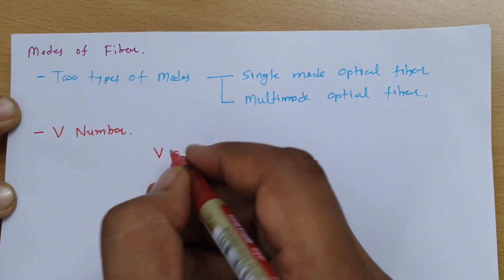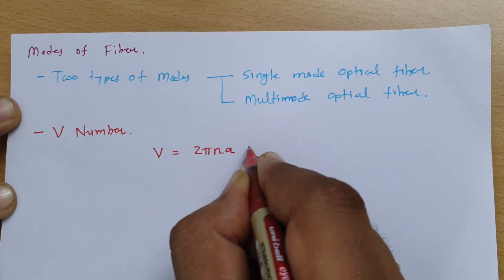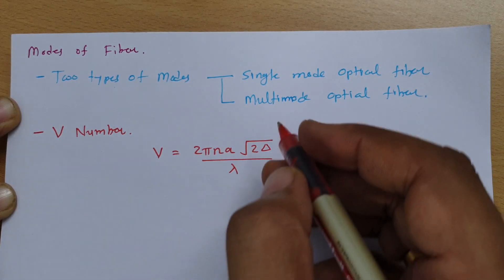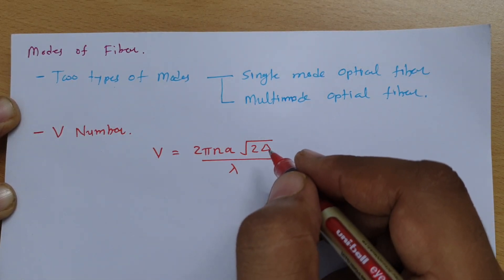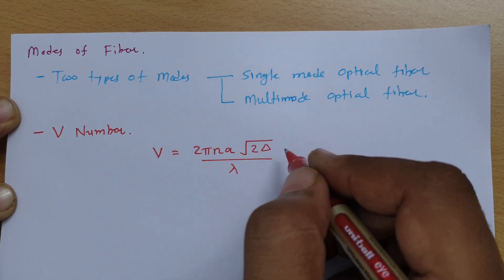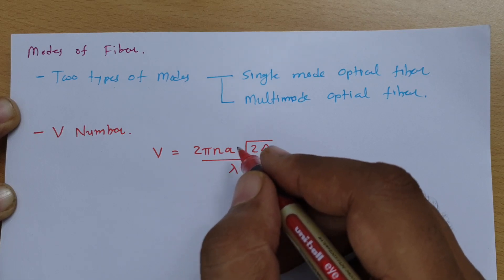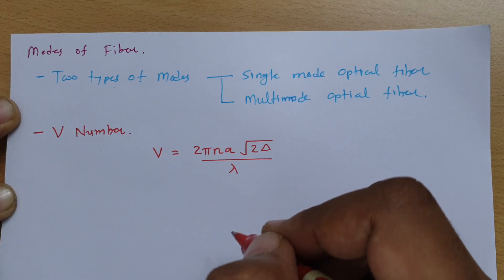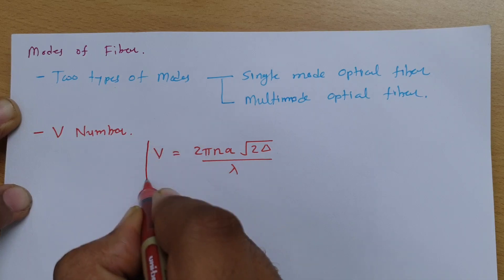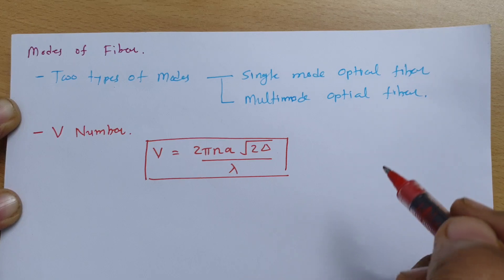The V number can be calculated by the formula: V = (2π/λ) × a × √(2Δ), where Δ is the difference in refractive index between the core and cladding (n1 minus n2), λ is the wavelength, and a is the radius of the core. This V number is essential in determining single mode versus multi-mode optical fiber.